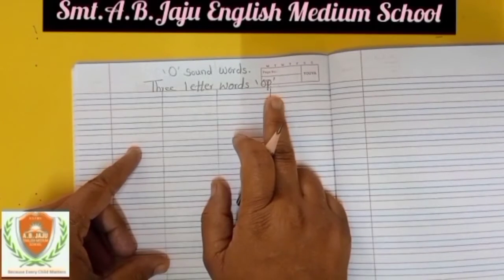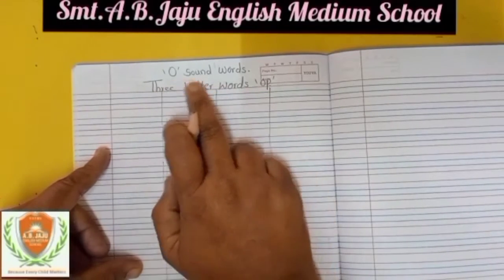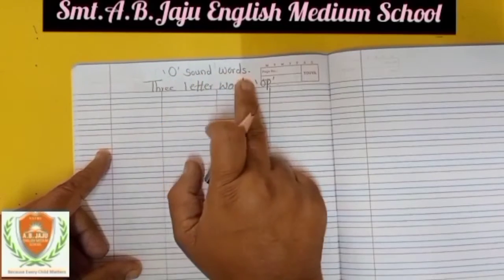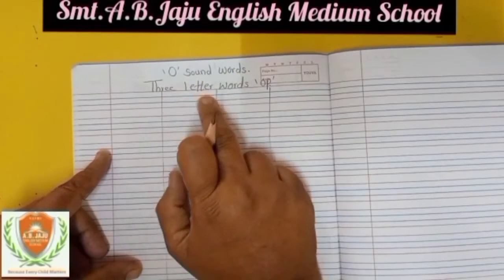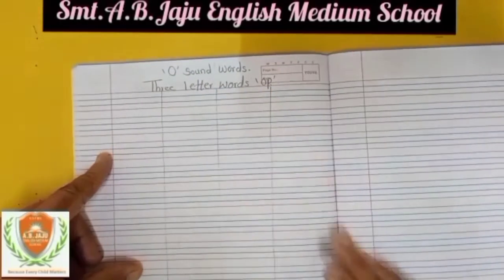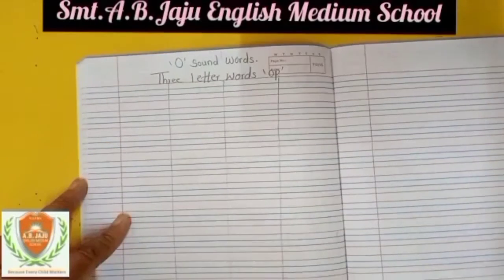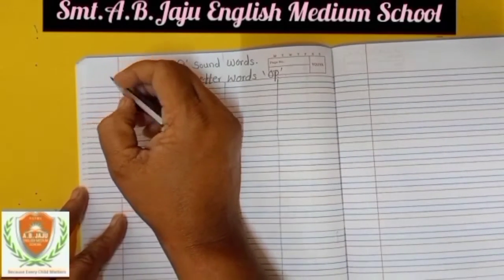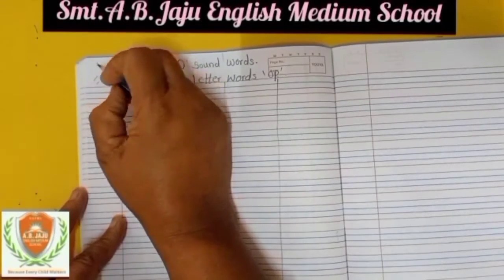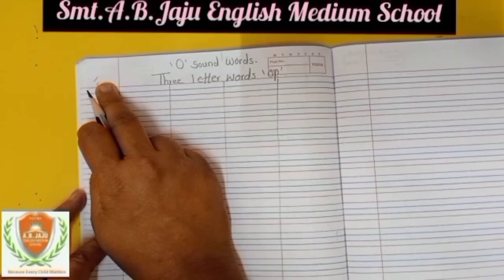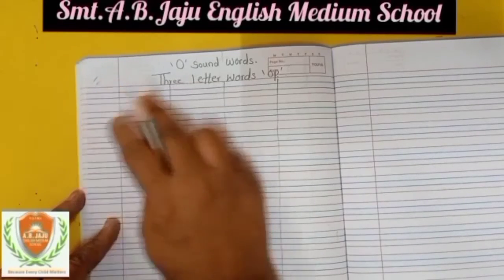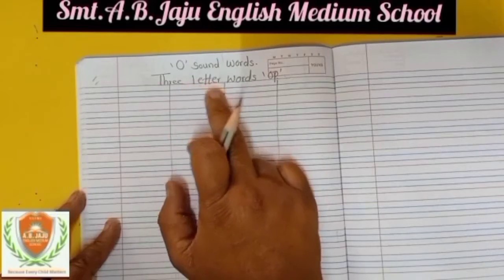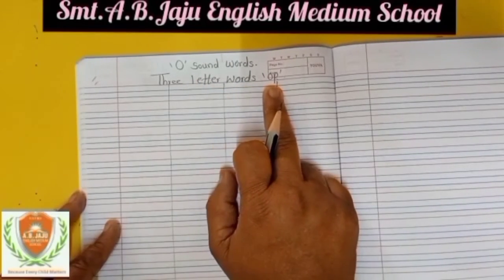We will begin with OP words. On the top you have to write down 'O sound words' and 'three letter words.' Write down today's date in the corner, and on the top write 'O sound words, three letter words, OP words.'